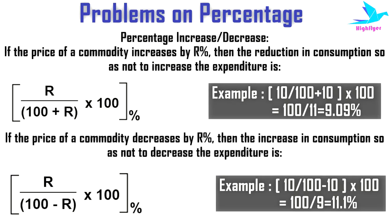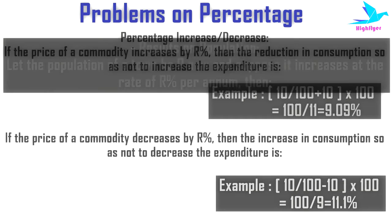If the price of a commodity decreases by R percent, then the increase in consumption so as not to decrease the expenditure is R by (100 - R) into 100 percent. For example, if a commodity's price decreases by 10 percent, then you have the opportunity to consume 11.1 percent more of that commodity within the same expenditure bracket.